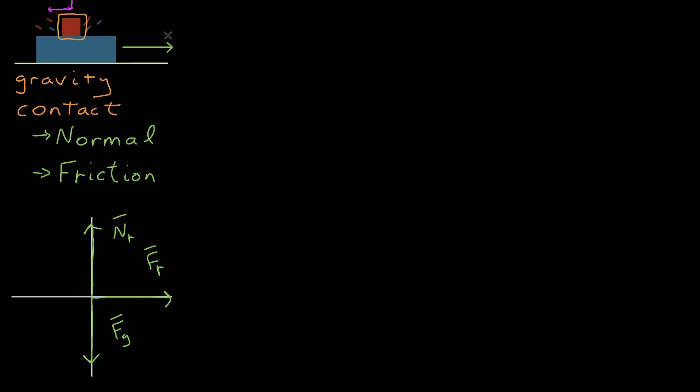We can confirm this is true because there are no other forces in the horizontal dimension. We know at the end the red block will get a velocity to the right, which means there had to be an acceleration to the right, which means there has to be a force to the right. And this frictional force is the only one there.